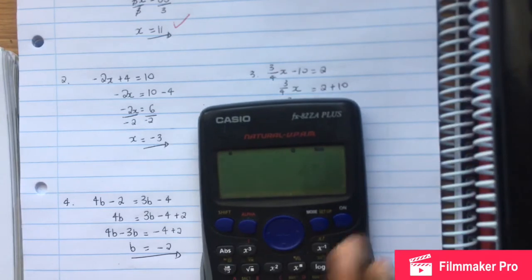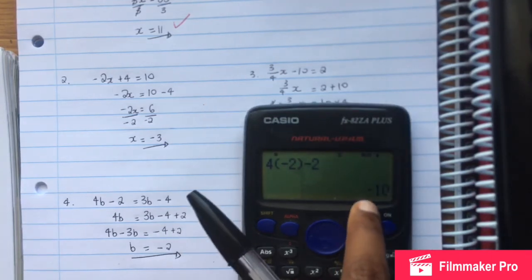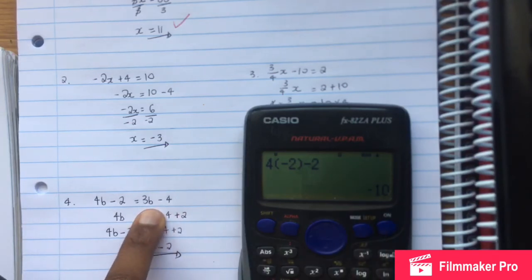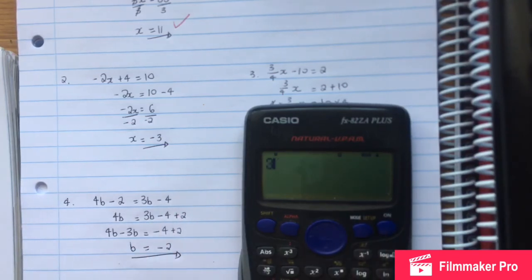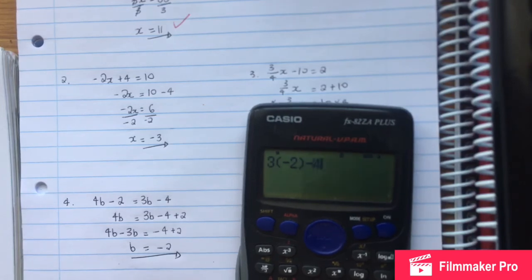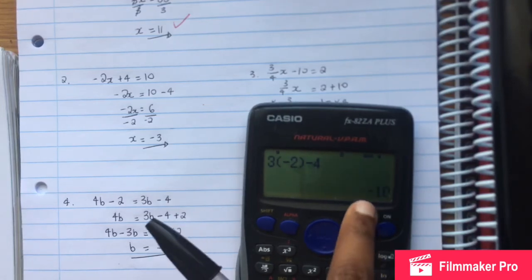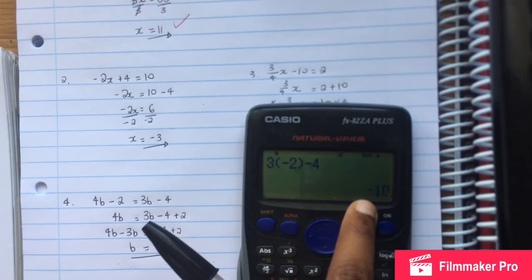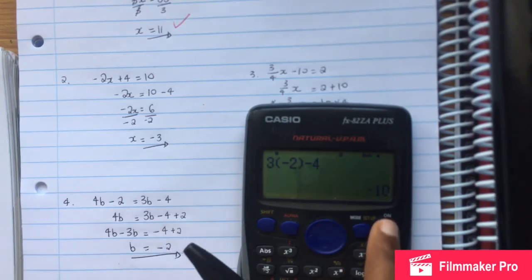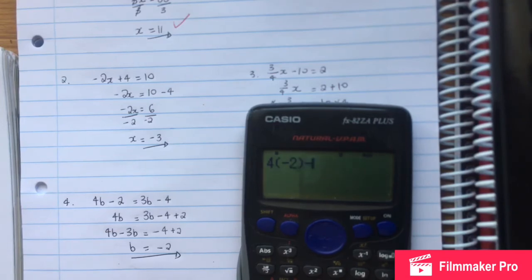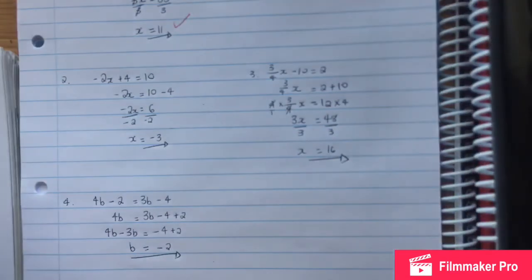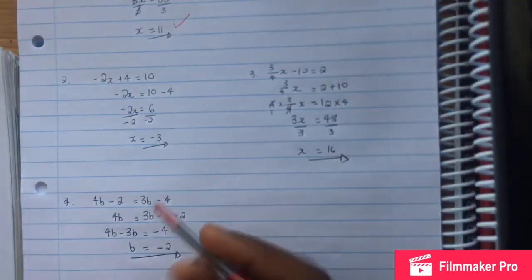Let's check. We put b as negative 2. 4 times negative 2 minus 2, the answer is negative 10. It must be equal to 3 times negative 2 minus 4, which is negative 10. So our answer is correct.